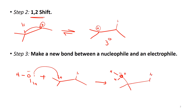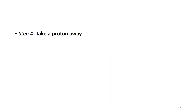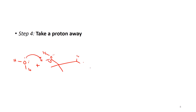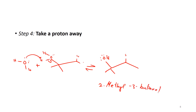I have here the two lone pairs, the hydrogen, and the methyl group. Lastly, we need to take a proton away from the oxonium ion. The oxonium ion reacts with a water molecule, which attacks one of the protons and this bond breaks. You can see that we form 2-methyl-3-butanol, instead of 3-methyl-2-butanol.